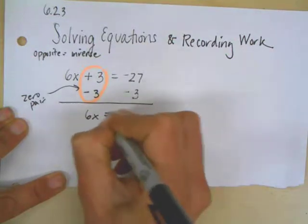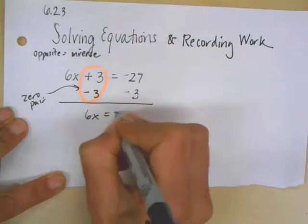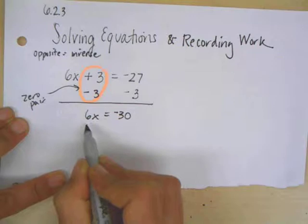So I have 6x equals, and I'm bringing everything straight down, negative 27 minus 3 is negative 30.